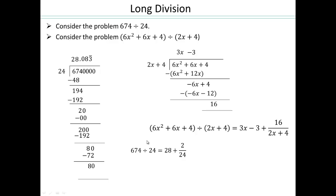Look at the similarity between those two — they work exactly the same way. You take this number times what gets closest here, do subtraction, and keep going. Same thing here: you look at this polynomial, look at what comes closest to 6x squared, pick that, and keep going until you get a remainder. In decimal numbers, you can just keep going until you get a repeating pattern.